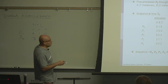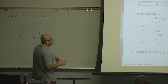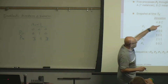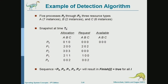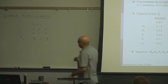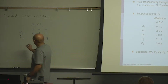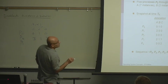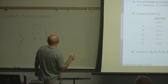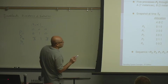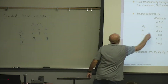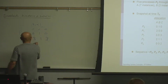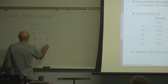Then we scan through the list. Now we have three, one, three. Can we satisfy P1's request? Yes, we can. So we put P1. After P1 is done, it's going to release two more instances of A. So we will have five, one, three.